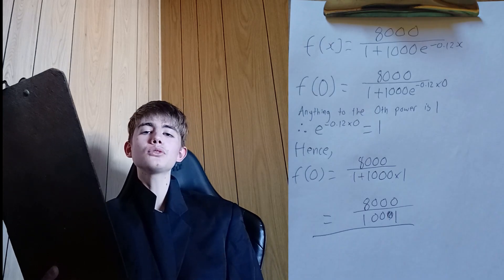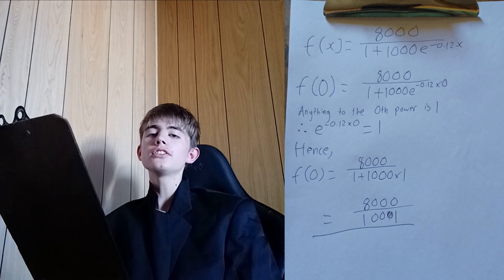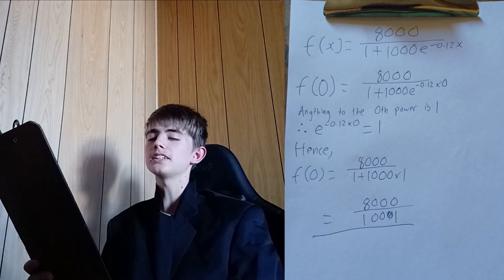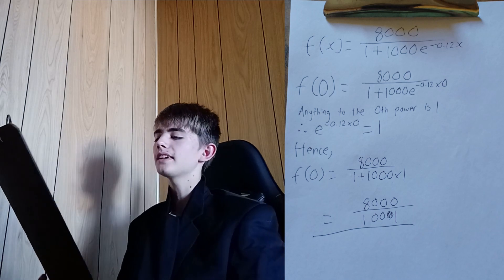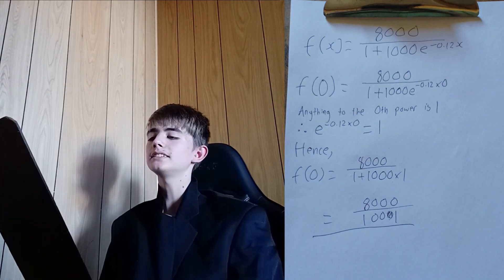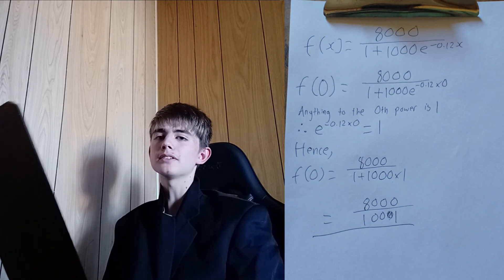When you calculate f(0), asking for a friend of course, we can determine the initial value where x is equal to 0. To do so, we just substitute the value x equals 0 into the function. Hence, we get 8000 divided by 1 plus 1000 e to the power of negative 0.12 times 0.